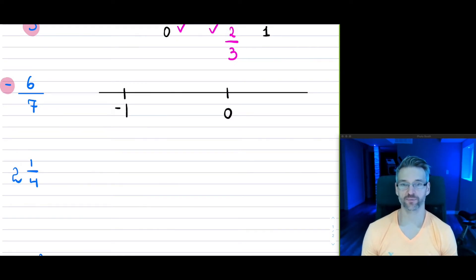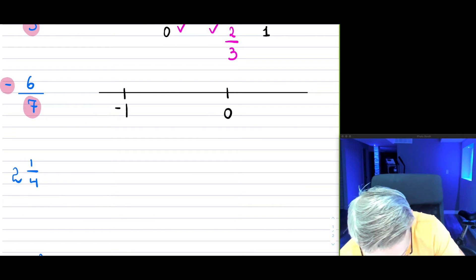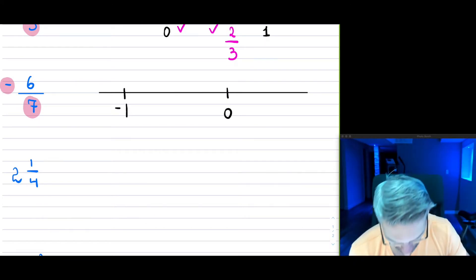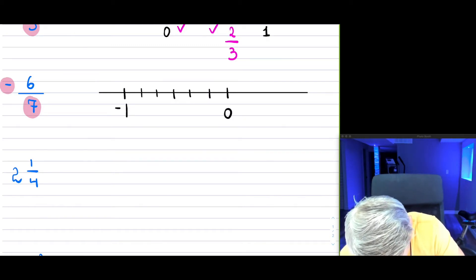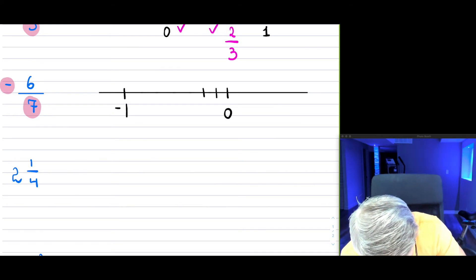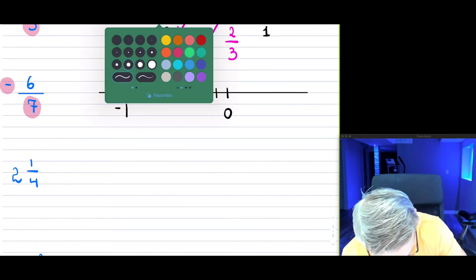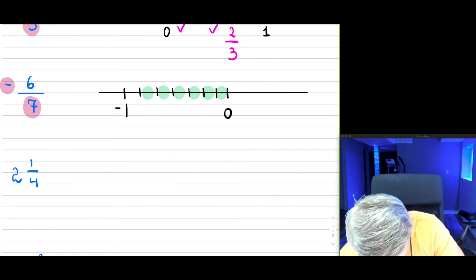So 6 over 7, if it were positive, would be less than 1. But we're going in the negative direction, and our denominator is 7, so we have to divide this into 7 equal pieces between 0 and negative 1. So I mark out 7 pieces — 1, 2, 3, 4, 5, 6, and 7 — with equal spacing.